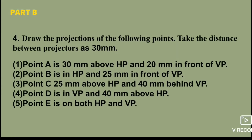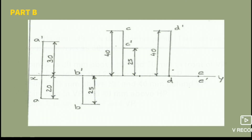If you want to use a circle of points, draw the projection of points. Take the distance between projectors as 13m. With a projection, you can use a circle of 3m on points. Find your next point. The projectors are the distance from one side to the other.